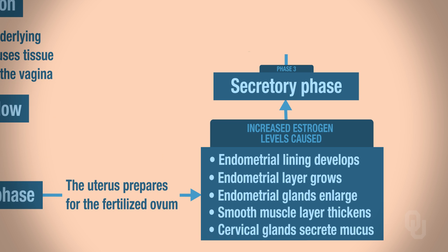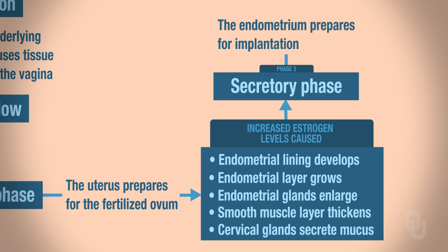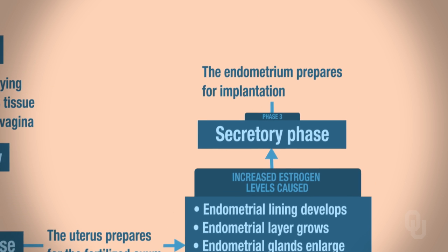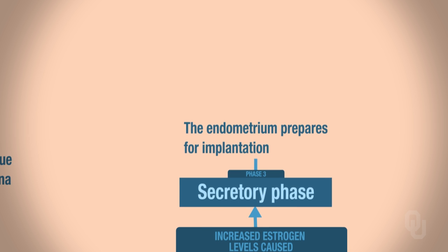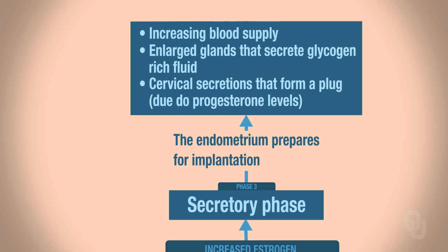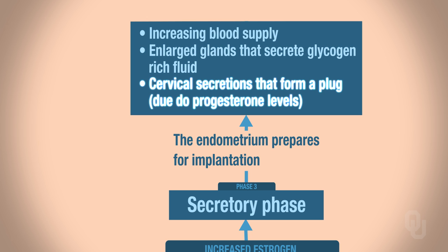The next phase is the secretory phase, and it begins as the endometrium prepares for implantation — implanting the fertilized egg, the zygote, in the wall of the uterus. During the secretory phase, there is an increase in blood supply and enlarged glands that secrete glycogen. Why would you want glycogen there? Think about that. There are also cervical secretions that form a plug, and all of this is due to progesterone levels going up.